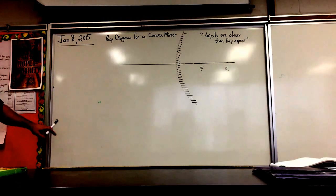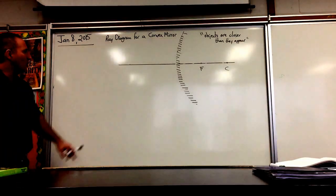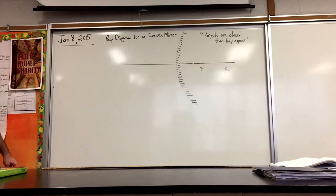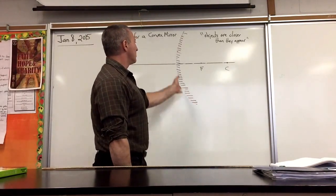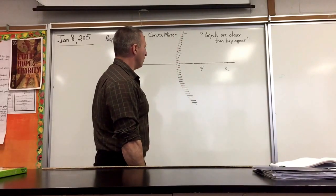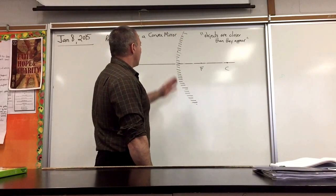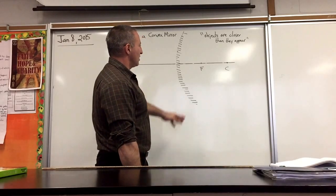In today's example, we're going to show how to draw a ray diagram for a convex mirror. A convex mirror means that the shiny side is on the outside, curving out. In a concave mirror, the shiny side is curving in.